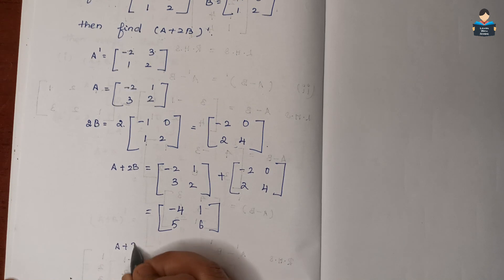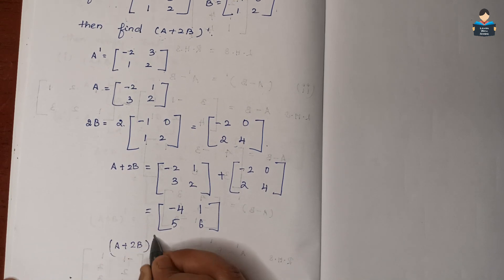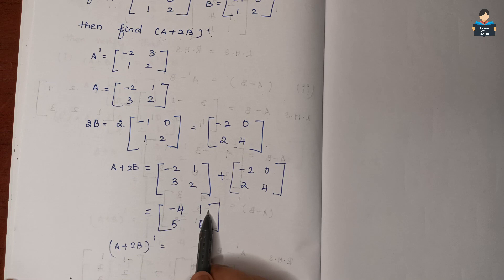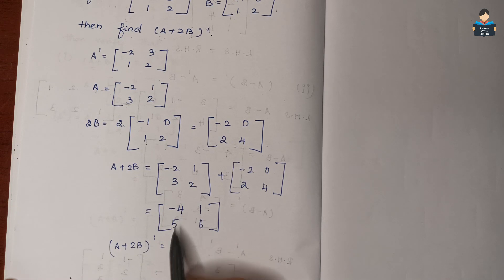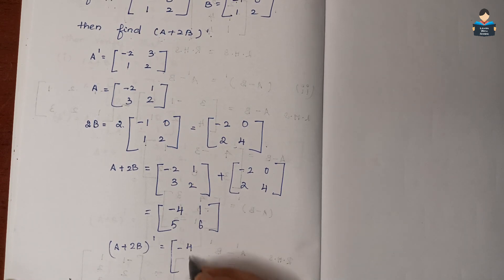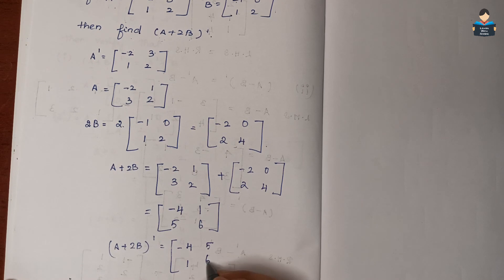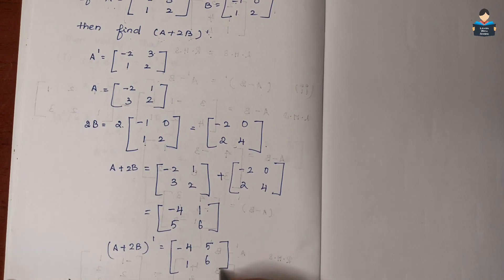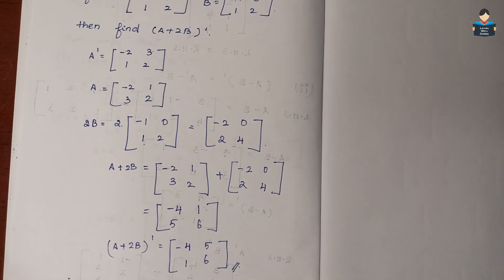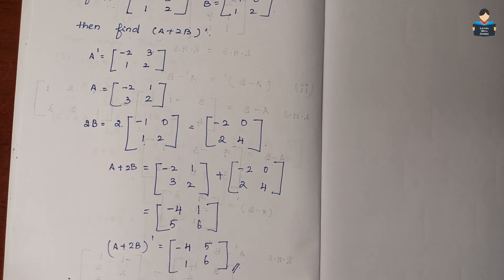Now (A + 2B) whole transpose — we convert rows to columns. So the final answer is [[-4, 5], [1, 6]]. That is the answer for Question 4. Next we look at Question number 5.